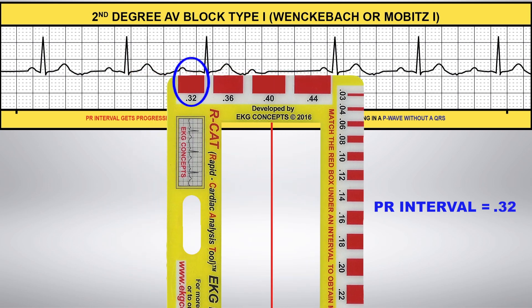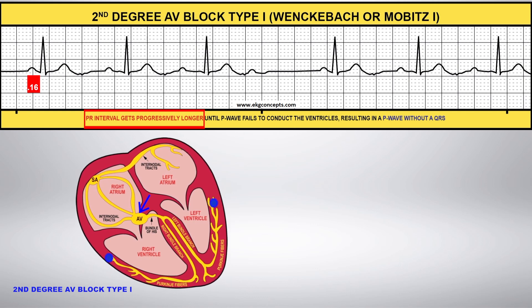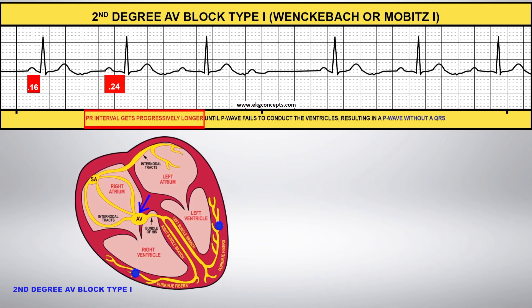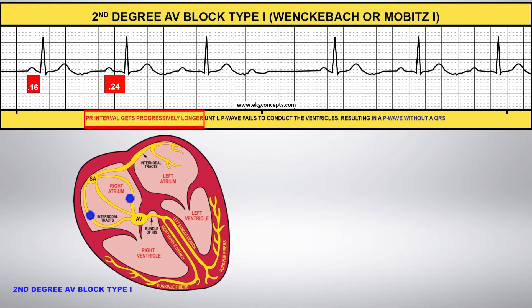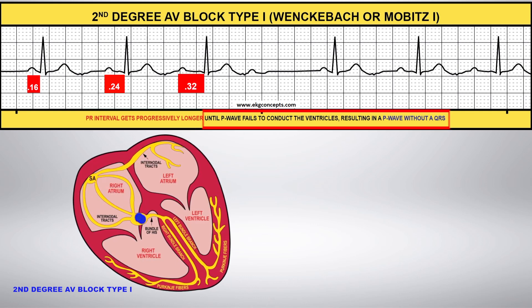You'll see the next P wave does not have a QRS complex. The PR interval becomes progressively longer until the P wave fails to conduct the ventricles, resulting in a P wave without a QRS.